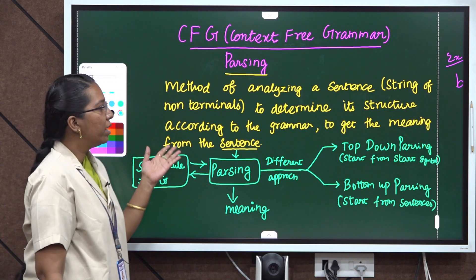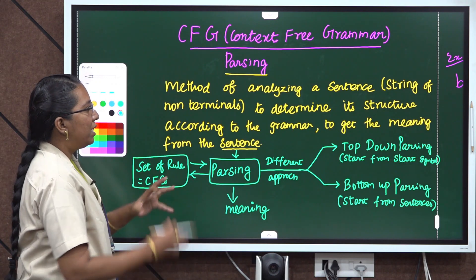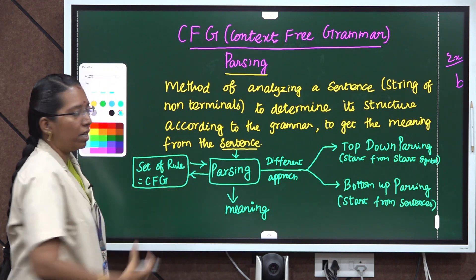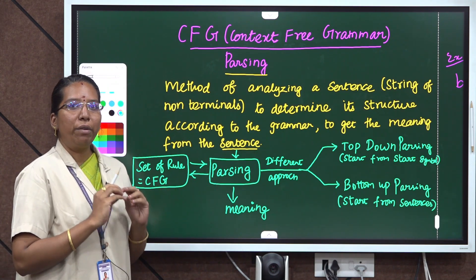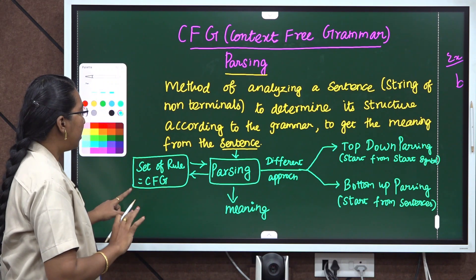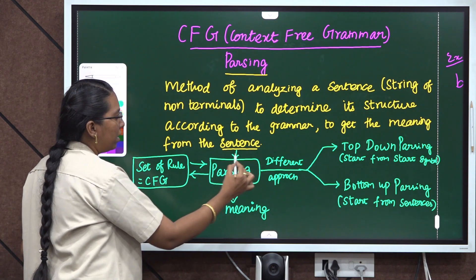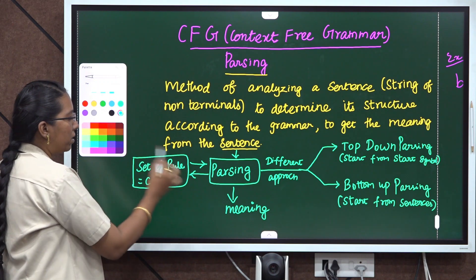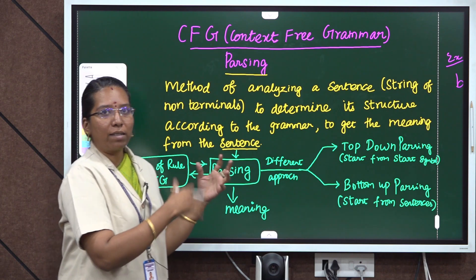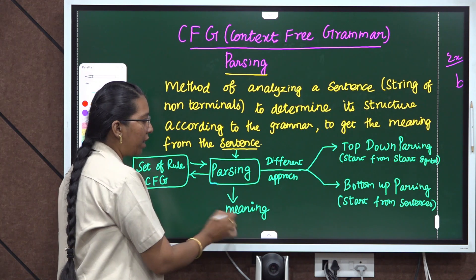Next one is parsing. We can see the definition of parsing: it is a method of analyzing a sentence to determine its structure according to the grammar, to get the meaning from the sentence. The basic goal is to get the meaning from the sentence — that is the main motto of parsing. Once the parsing is done, we can get the meaning.